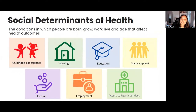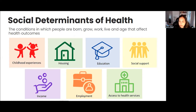Social determinants of health are a broad cluster of factors — the conditions in which people are born, grow, work, live, and age — and these affect health outcomes. They can be childhood experiences, the environment we're born into, the way that we're raised, housing, access to education, the kind of social support we may experience, the income of the family we're born into, employment prospects, as well as access to health services. These are the structural factors that really help shape our lives.